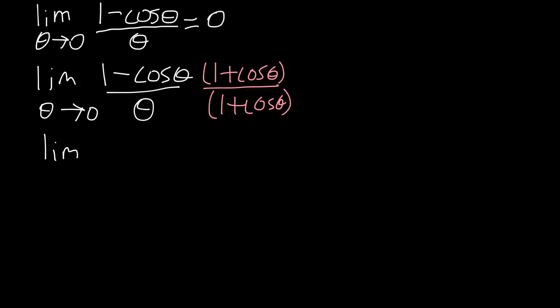So now our limit will look as follows: the limit as theta goes to 0 of 1 minus cos squared theta all over theta times 1 plus cos theta. Now, we're still not there yet, because if we evaluate this limit, it's still going to be 0 over 0. But we have made some progress, because 1 minus cos squared theta can be rewritten.